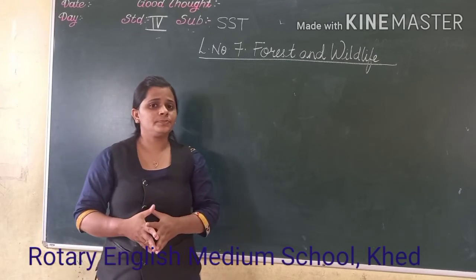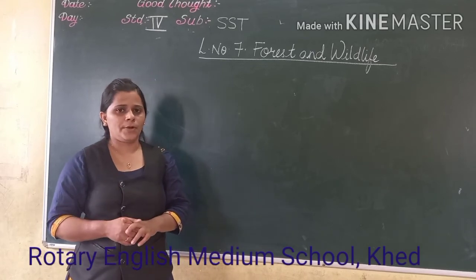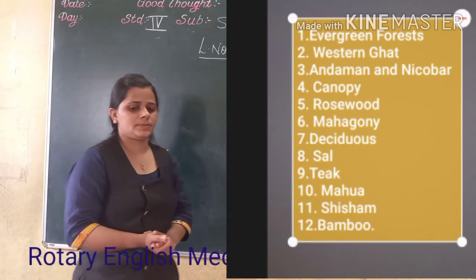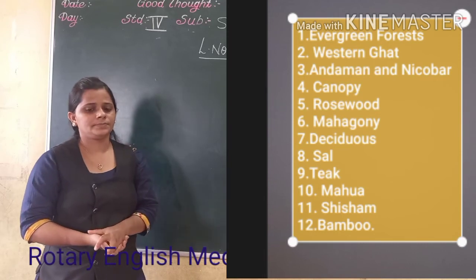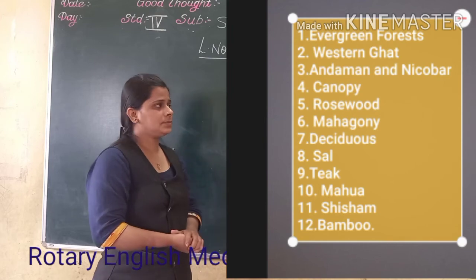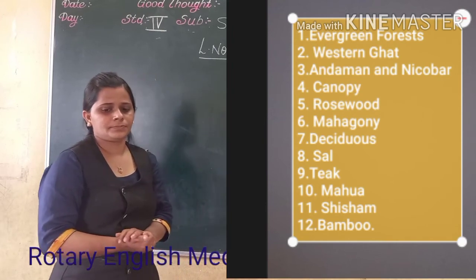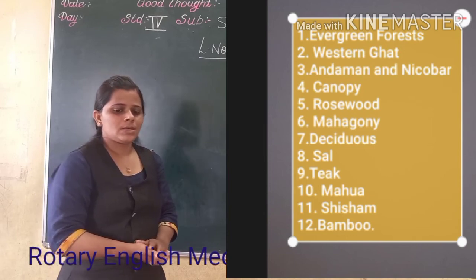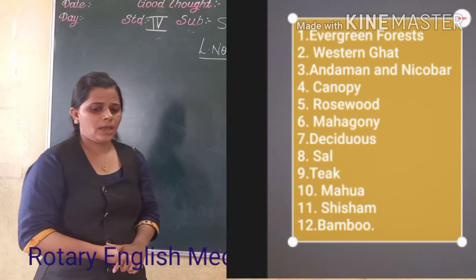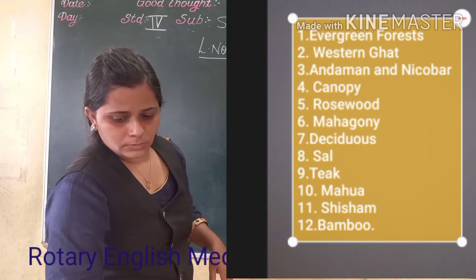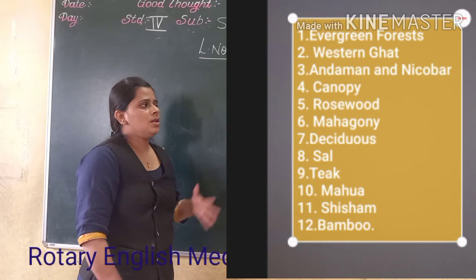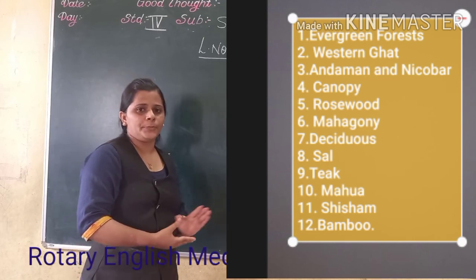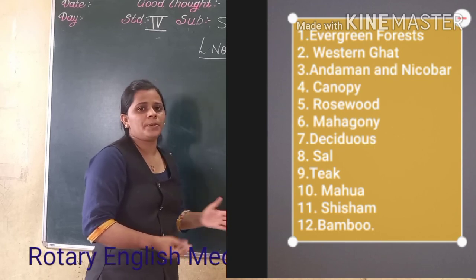Now, you have to read the textbook and underline the important points. Take down your new words: Evergreen Forest, Western Ghats, Andaman and Nicobar, Canopy, Rosewood, Mahogany, Deciduous, Sal, Teak, Mahua, Sheesham, Bamboo. Copy these new words down in your notebook.